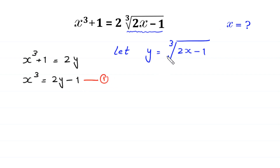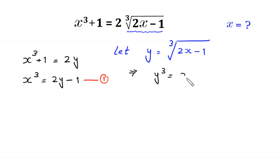If we take the cube of both sides of the substitution equation, then this implies that y cubed is equal to 2x minus 1. We name this equation 2.